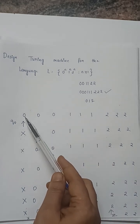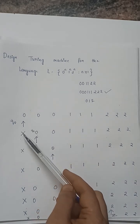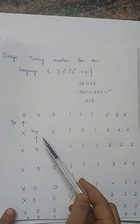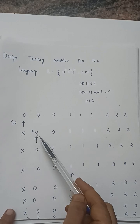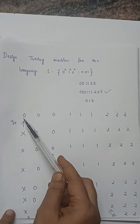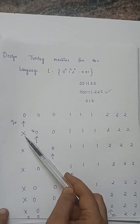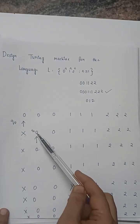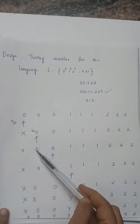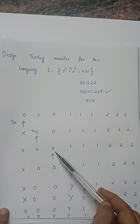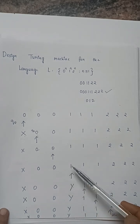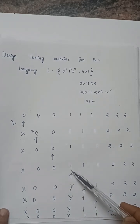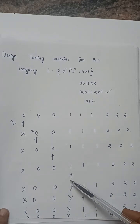For the first zero, it is replaced with x and the machine moves to the right, scanning for the first one. All zeros are read and written while moving to the right. Whenever the machine reaches a one, that one is replaced with y.